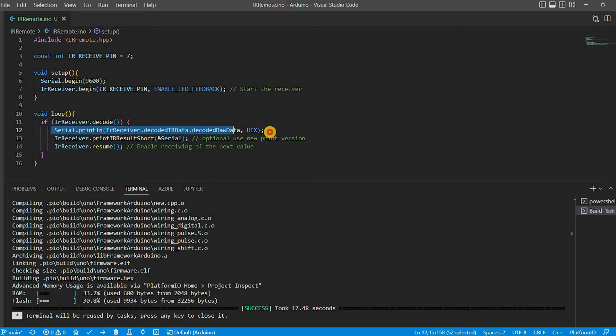This line will print out the hexadecimal codes that come. Let's deploy to the Arduino and open a serial monitor.